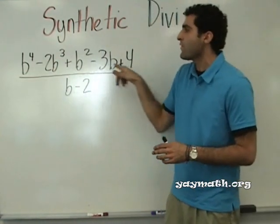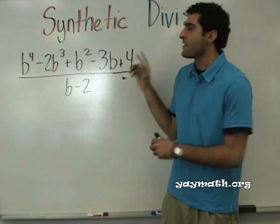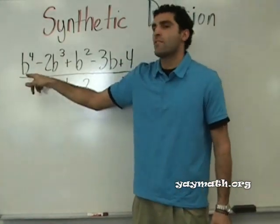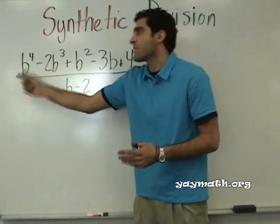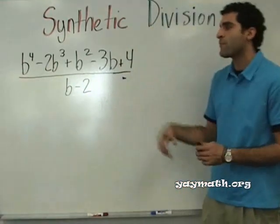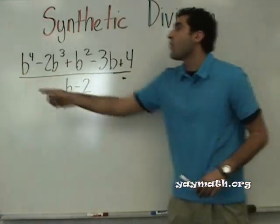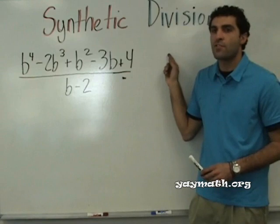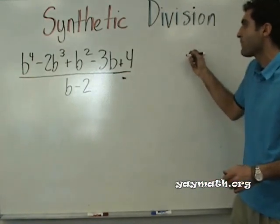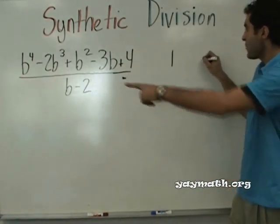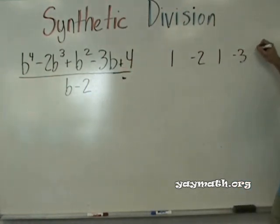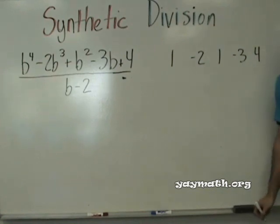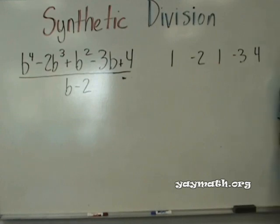Alright, so focus on the coefficients for now. Because in a different problem, if this was 2b to the 4, that coefficient would be 2. This is 1b to the 4, so the only difference is the 2 or the 1. So bear with me for a second and see what I'm saying. What are the coefficients for this top portion? Listen up. One, negative 2, one, negative 3, four. Yes, you're going to have to write these down in order. These are the coefficients in order.